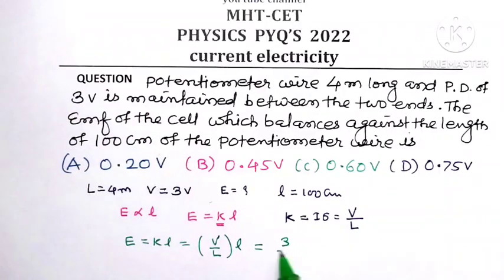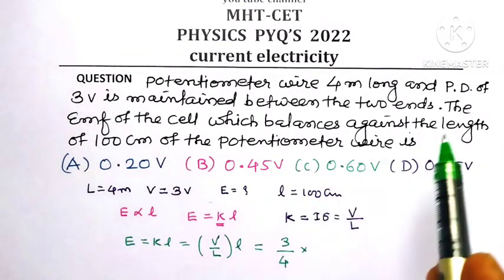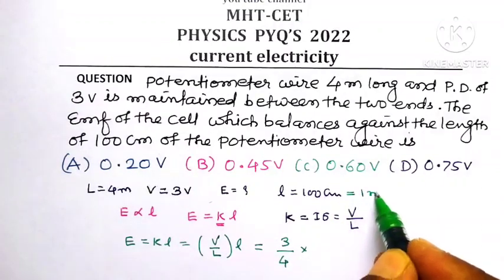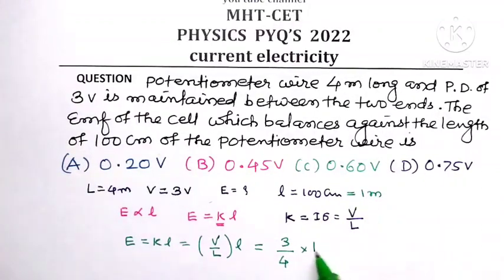3 volts. So this is 3 divided by the potentiometer wire length, which is 4 meters, multiplied by the balancing length. The balancing length is 100 centimeters, which means 1 meter, so multiplied by 1.